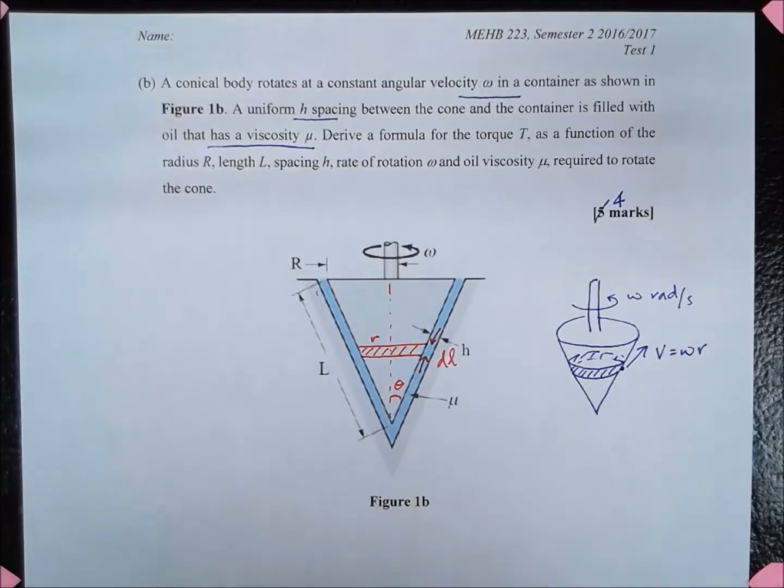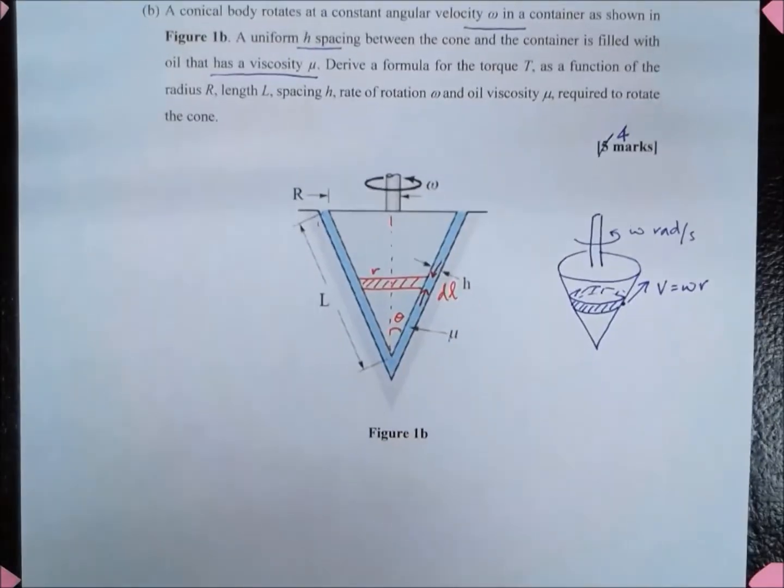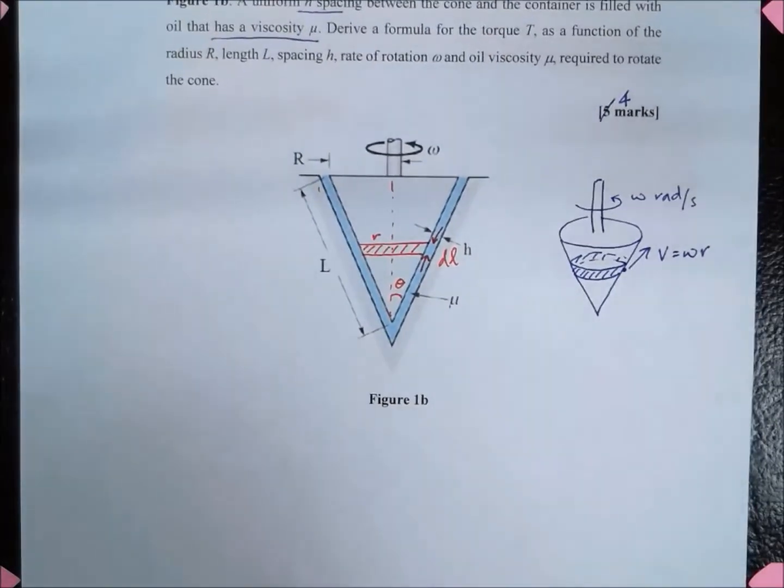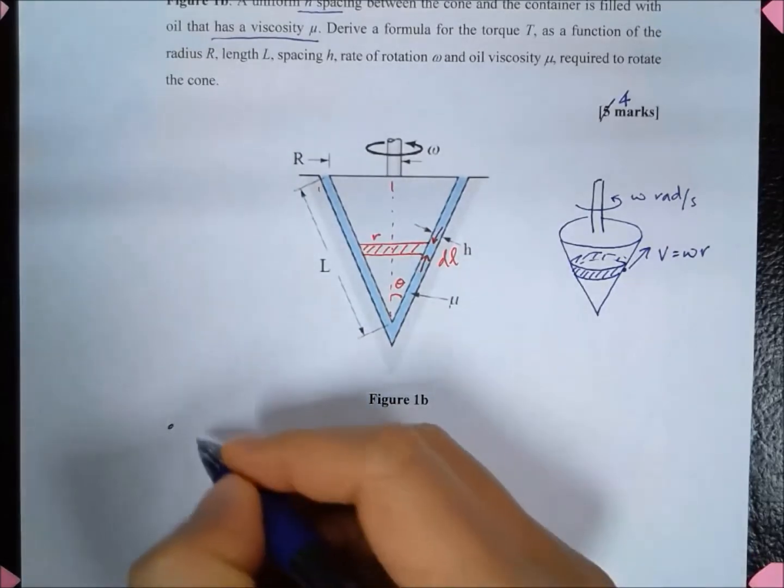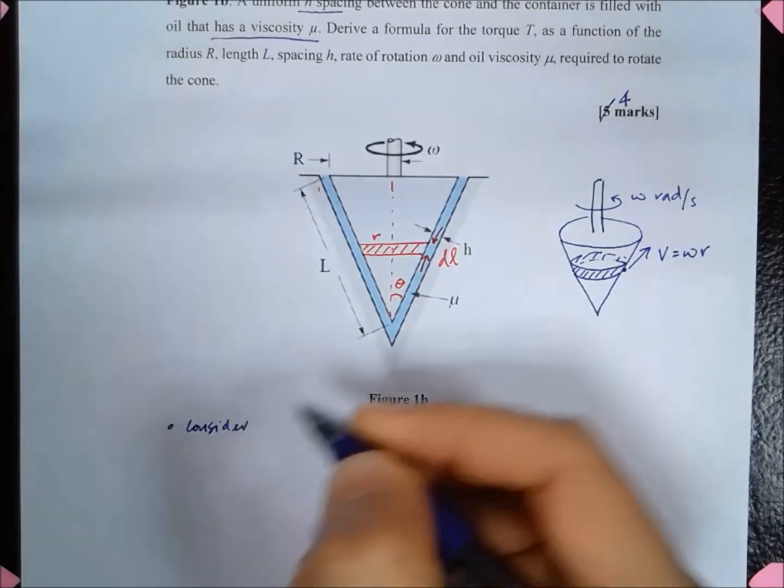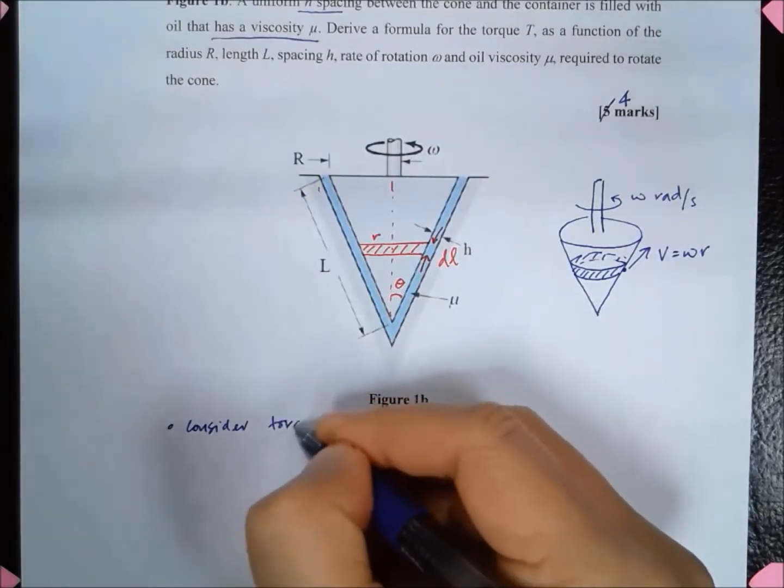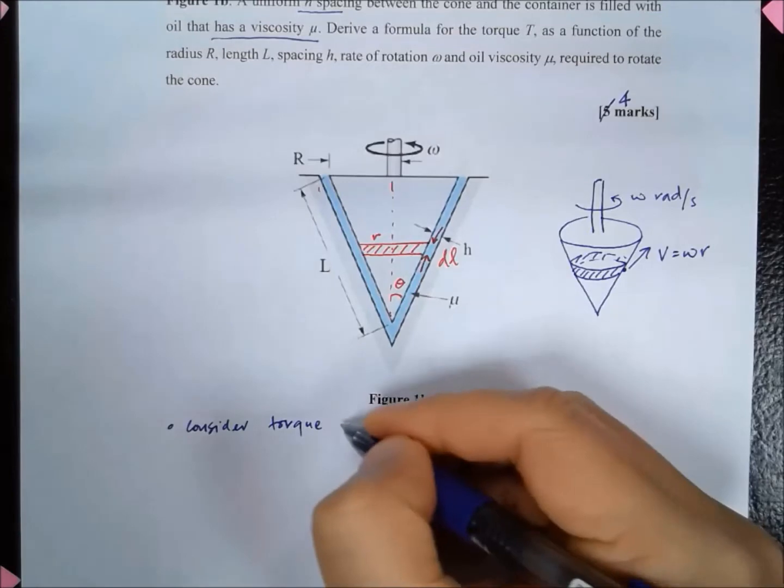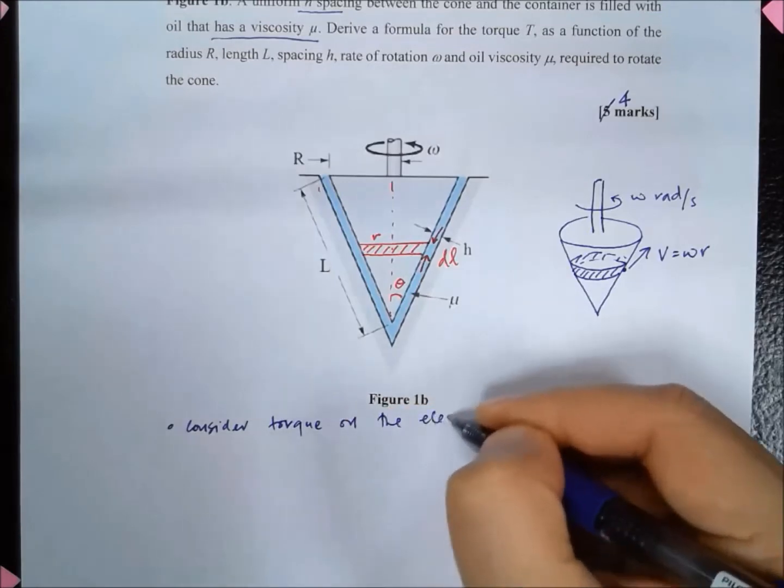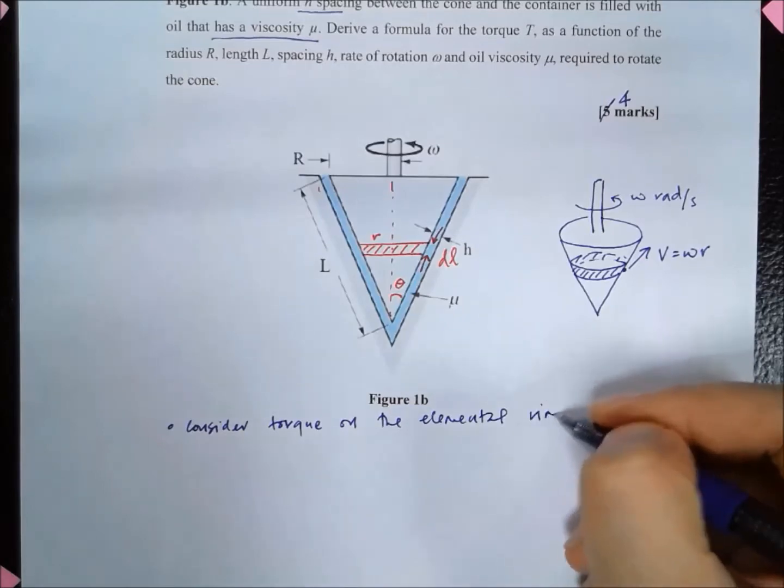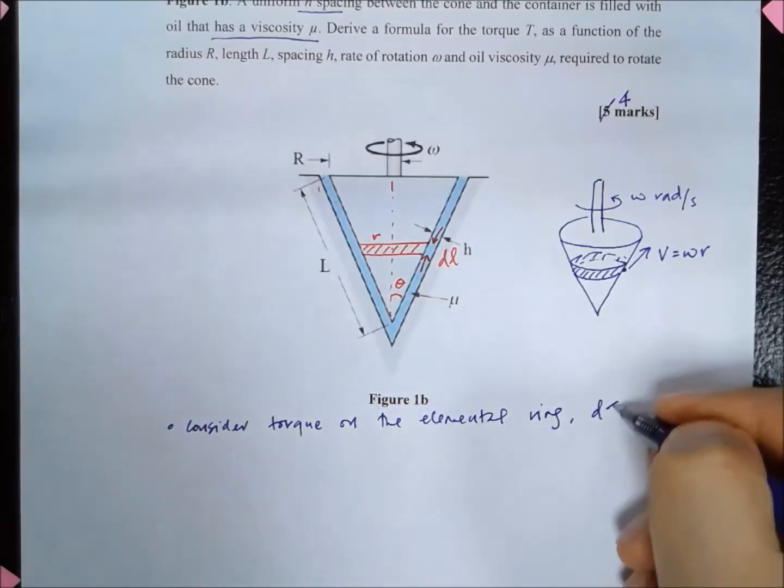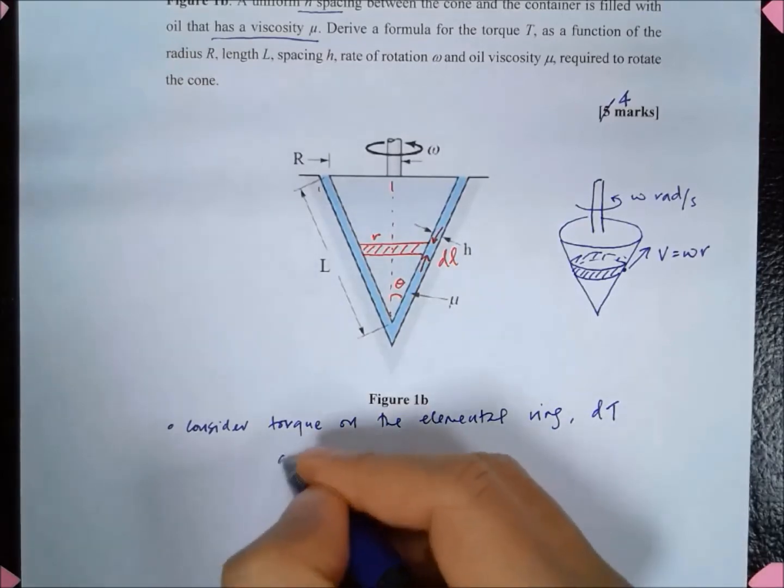In order to calculate the torque on the whole surface, the first thing that we need to do is to calculate the torque on this small element. Let's call this one dτ.